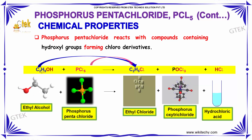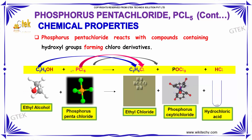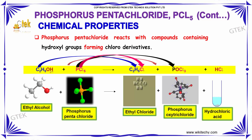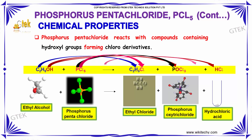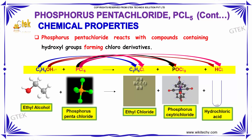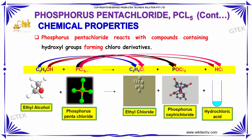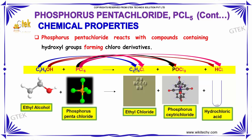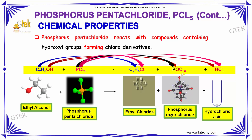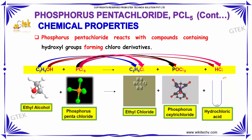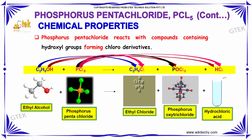When phosphorus pentachloride reacts with organic compounds containing a hydroxyl group, it forms a chloro derivative. For example, ethyl alcohol mixed with PCl₅ gives ethyl chloride, phosphorus oxytrichloride (POCl₃), and hydrochloric acid (HCl).